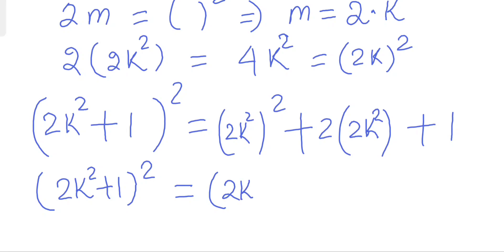...and this thing we can write as (2k)² plus 1. So according to our question, this is now Z, this is X, this is Y.